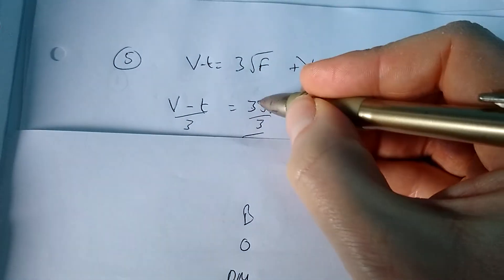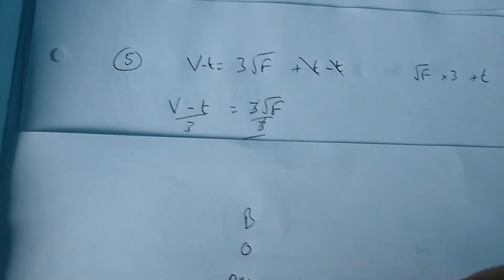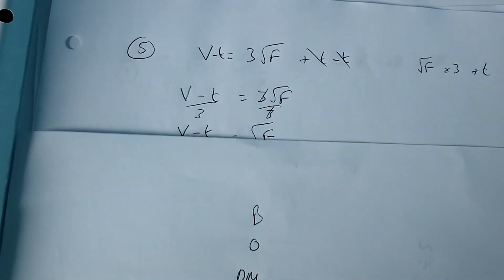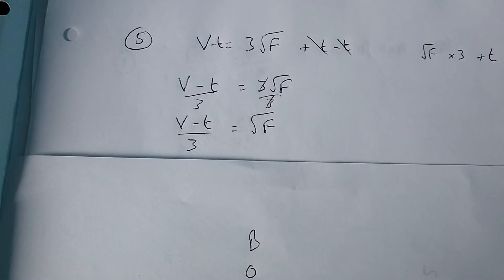So three divided by three is just one, so I'm left with one times the square root of f, or just square root of f, is v minus t divided by three.